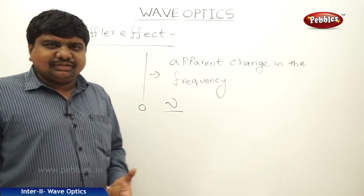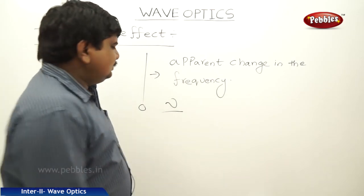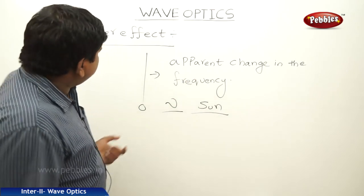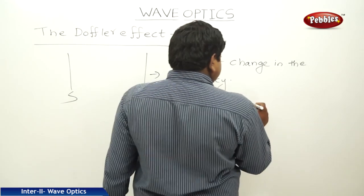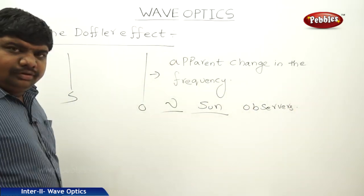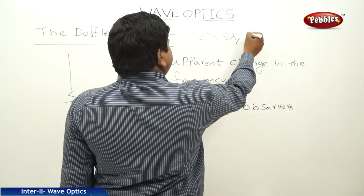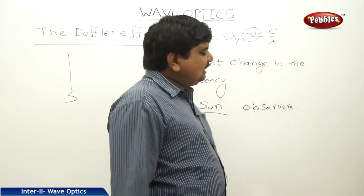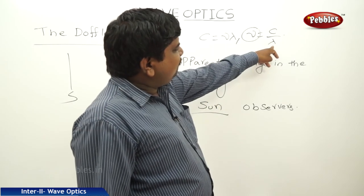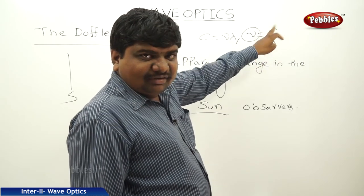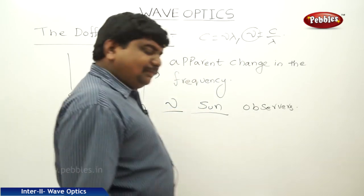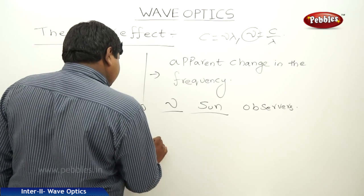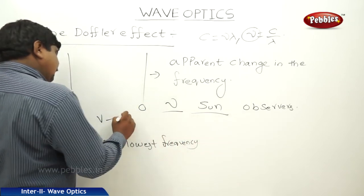For sound waves, we choose a source, but for light waves there are many natural sources available — the sun is the best example, along with torchlight, laser beam, and rainbow formation. The formula for the speed of light is c = νλ, so ν = c/λ. Frequency is directly proportional to speed but inversely proportional to wavelength: when wavelength increases, frequency decreases and vice versa. In the visible spectrum, violet has the shortest wavelength and highest frequency, while red has the longest wavelength and lowest frequency.